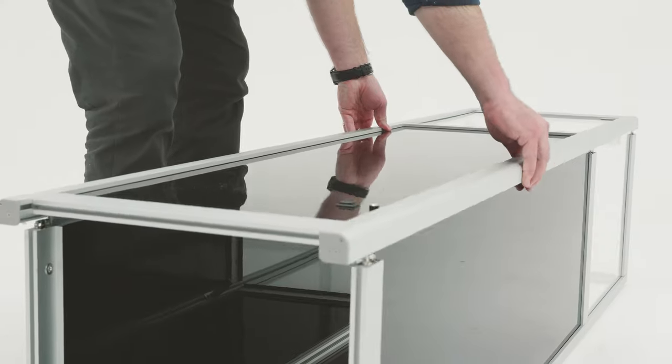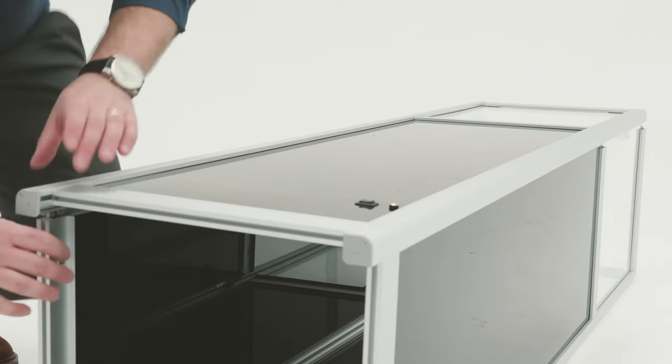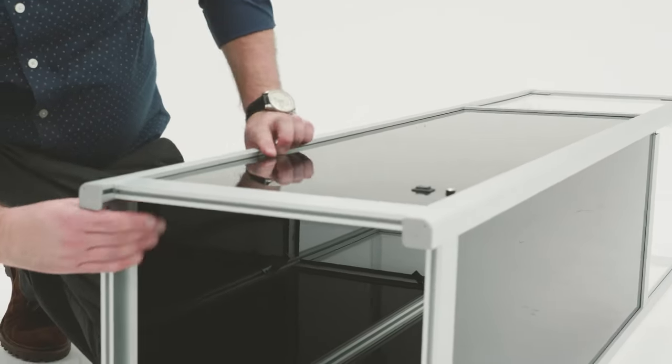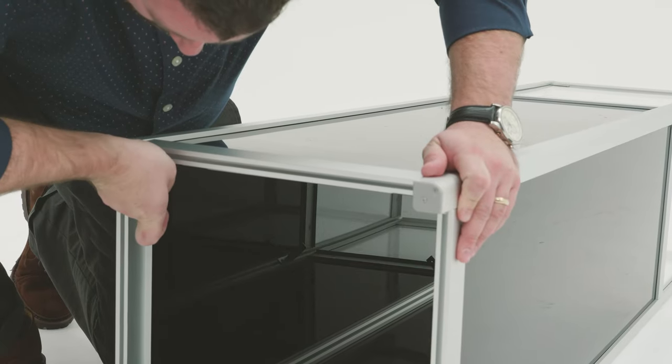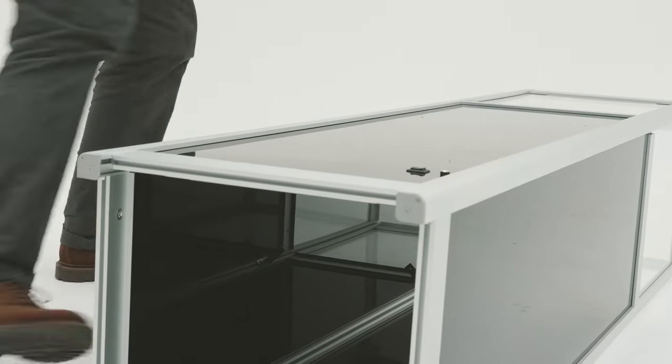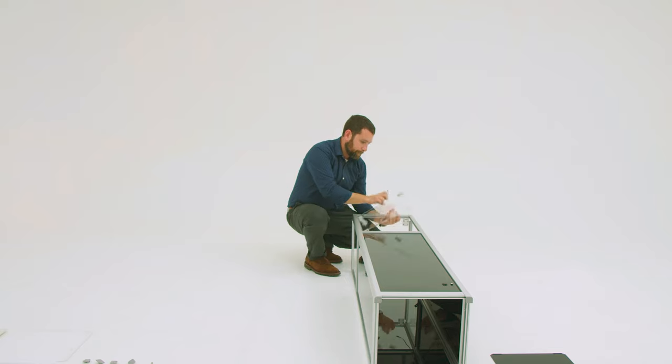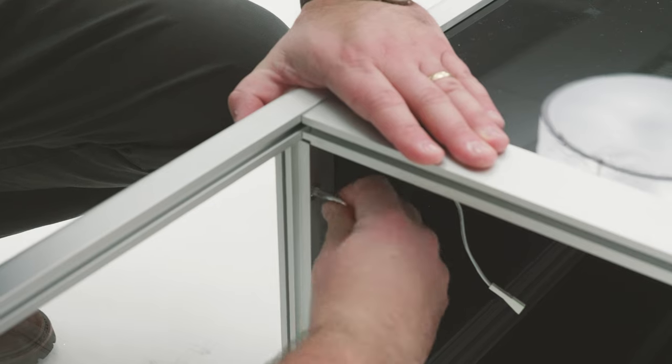Now, connect the frame module with the door with the assembled body. And tighten the screws in the aluminum bars that connect with the frame module. Quick tip, open the door to get to the screws on the middle bar.